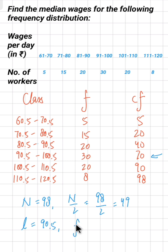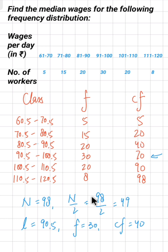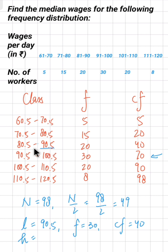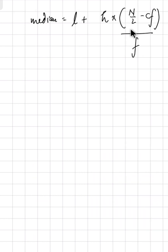The frequency of the median class is known as f, so f is 30. For CF, we take the cumulative frequency of the preceding class — the class just before the median class — which is 40. The only remaining value is h, the class size. Subtracting the lower limit from the upper limit of any class: 100.5 minus 90.5 gives 10, so h is 10.